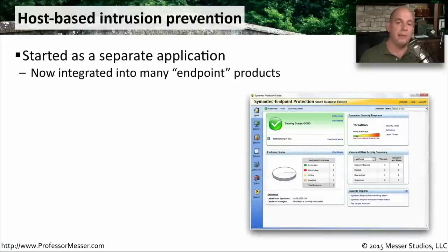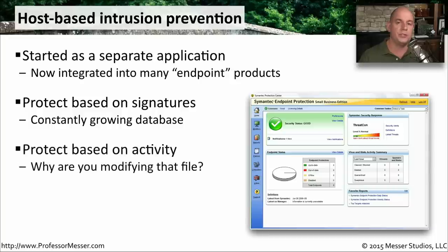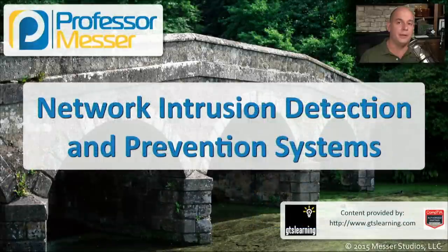Network-based intrusion prevention has also been brought down to the desktop through host-based intrusion prevention. What used to run as individual applications is now commonly integrated into antivirus or anti-spyware software running right on your desktop. These protect based on signatures, so keeping signatures updated is essential to know the latest threats. They can also monitor operating system activity — if certain files are being touched or changed, they can identify and stop that function from infecting your machine.